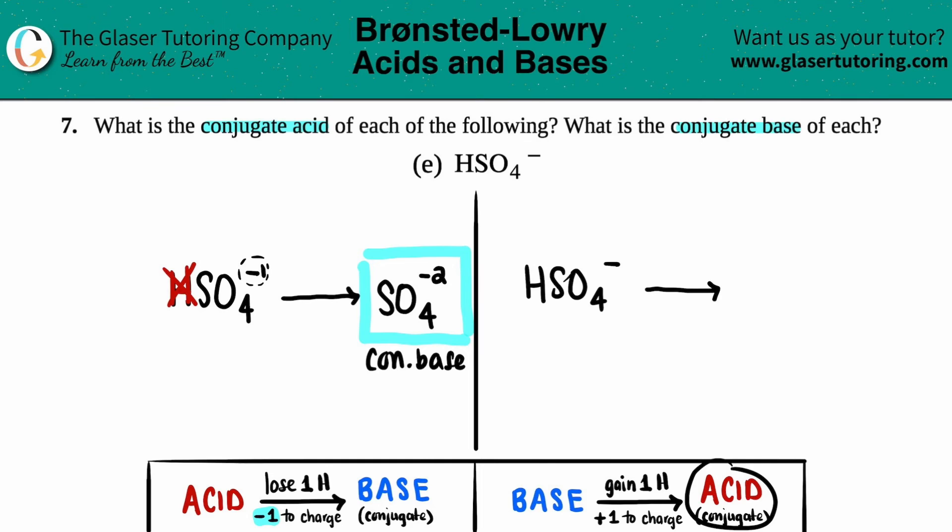Well, acids always have one more hydrogen. So you're going to just gain a hydrogen. So there was only one here. So now there's two, H2. And then the rest come along for the ride, SO4.